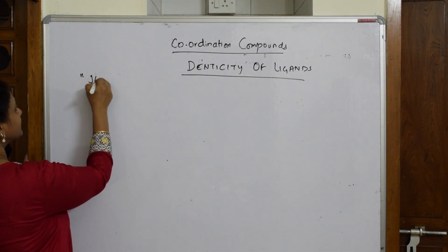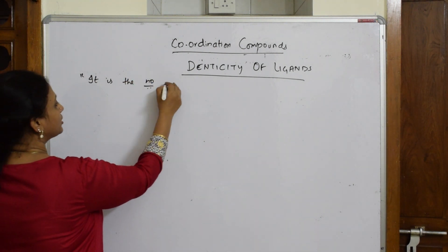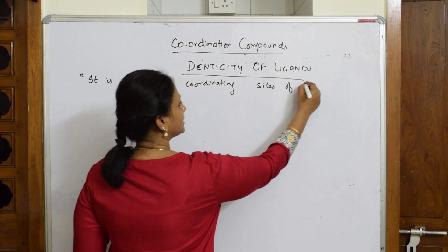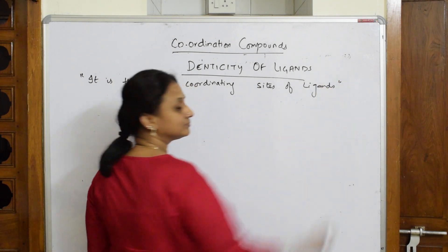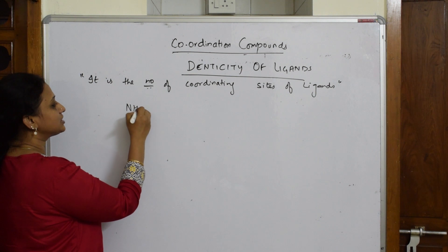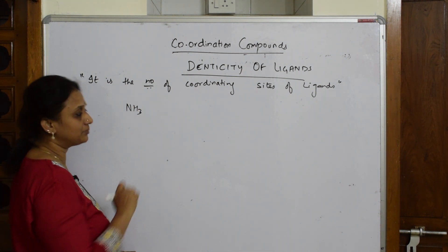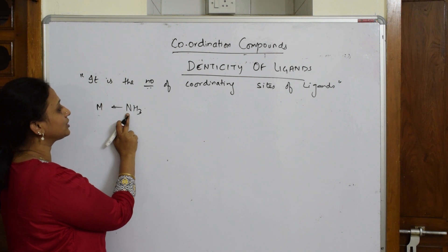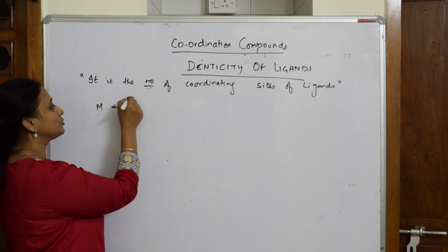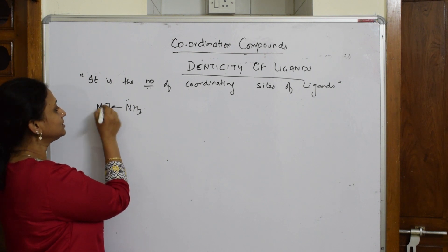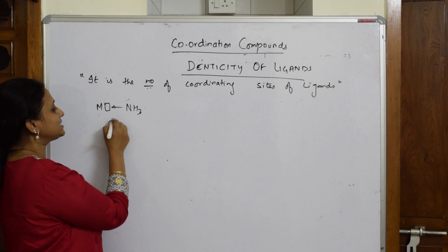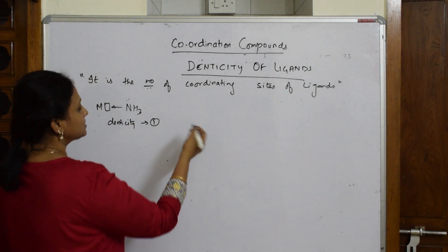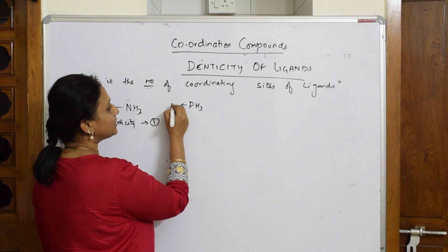Denticity is the number of coordinating sites of a ligand. For example, NH₃ is a neutral ligand — from how many sites can it attach to the metal atom? It has only one lone pair of electrons, so it donates that one lone pair to the metal atom, which has a vacant orbital. So the denticity of NH₃ is one. Similarly, PH₃ also donates from only one site, so its denticity is also one.